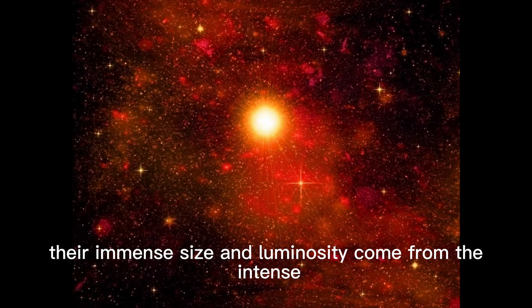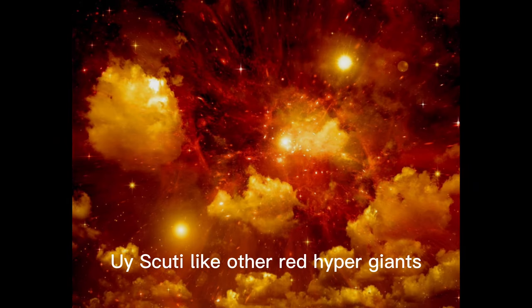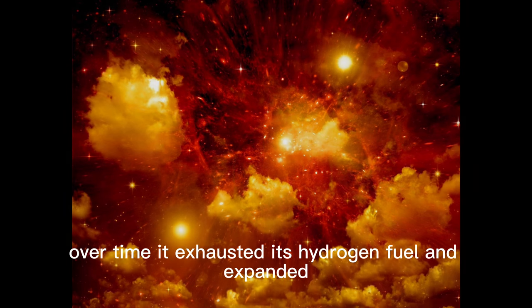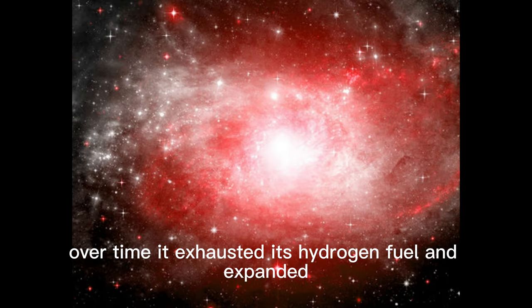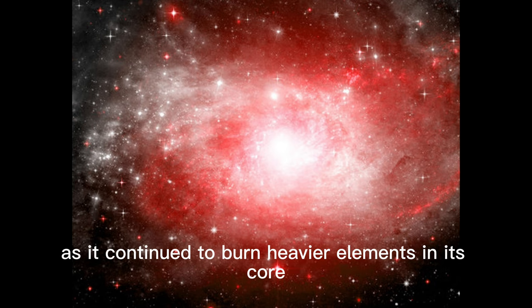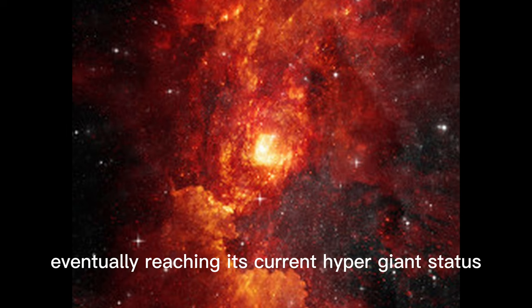Their immense size and luminosity come from the intense fusion reactions happening in their cores. UY Scuti, like other red hypergiants, began its life as a main-sequence star. Over time, it exhausted its hydrogen fuel and expanded, becoming a supergiant. As it continued to burn heavier elements in its core, it grew even larger, eventually reaching its current hypergiant status.